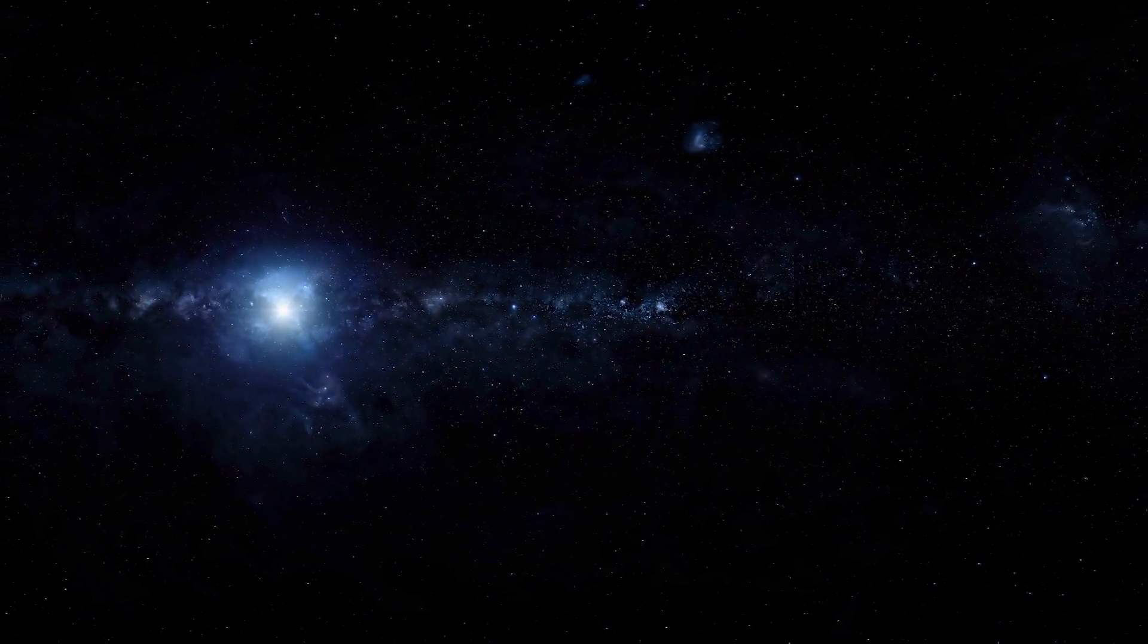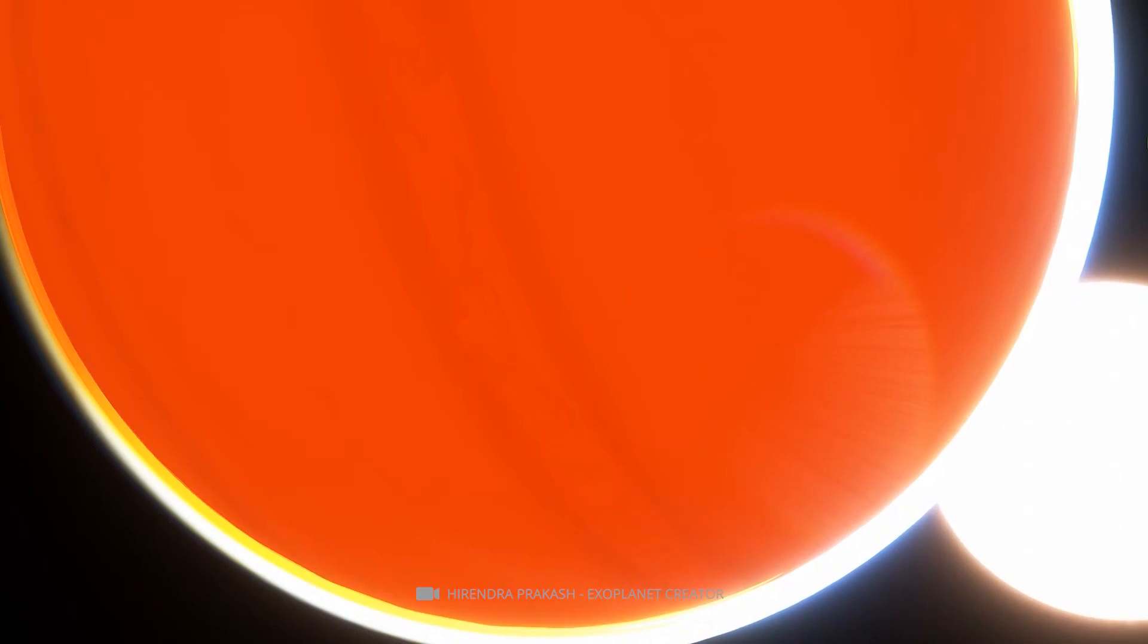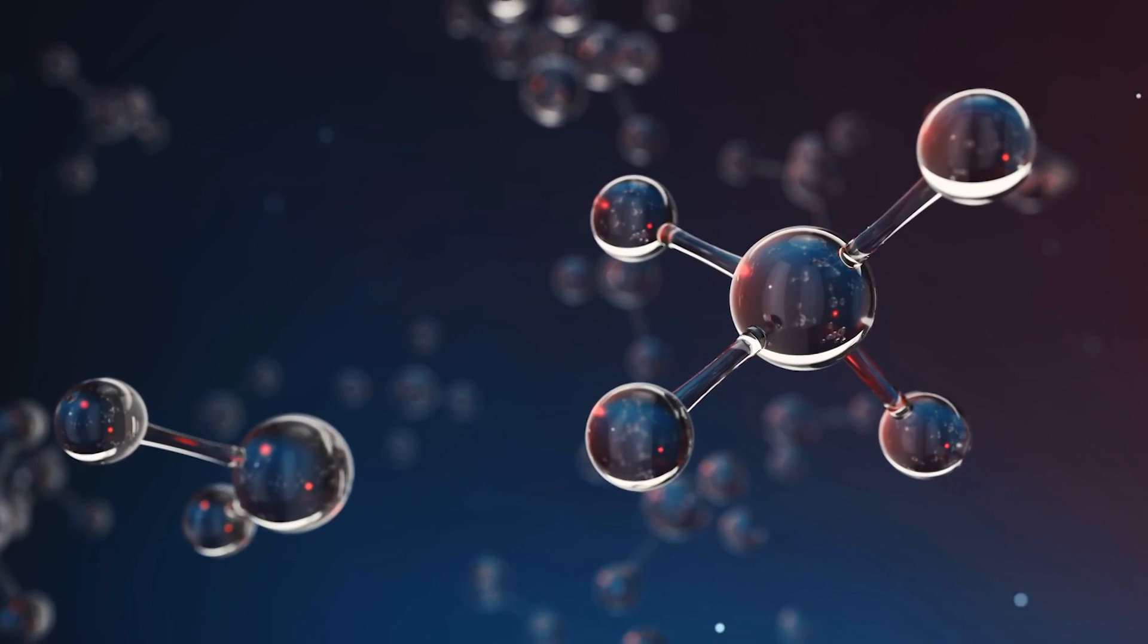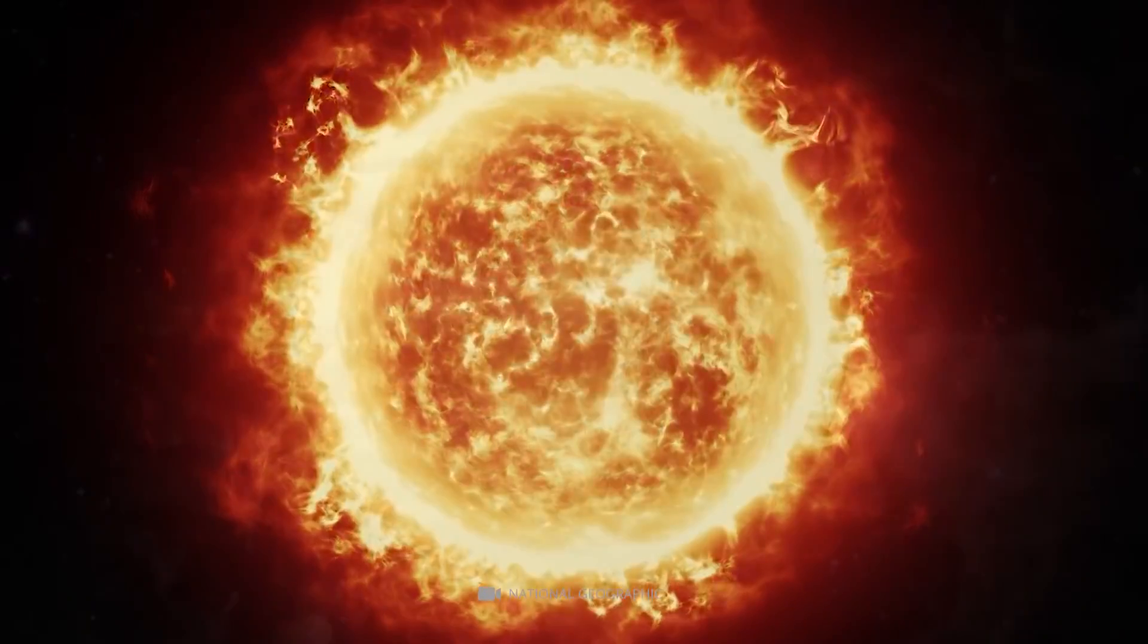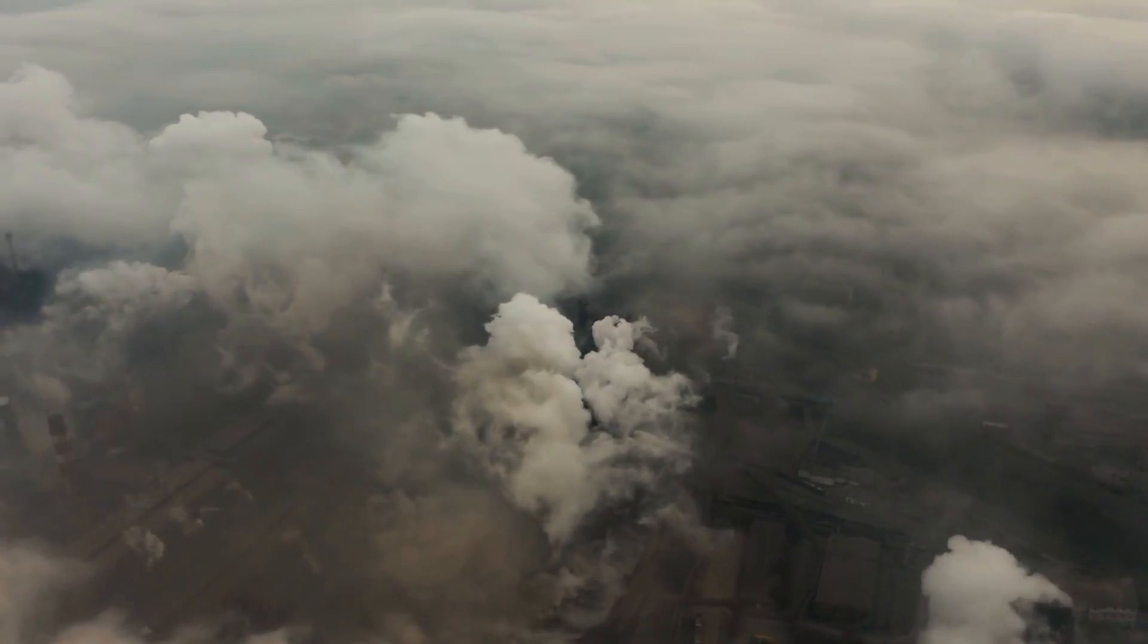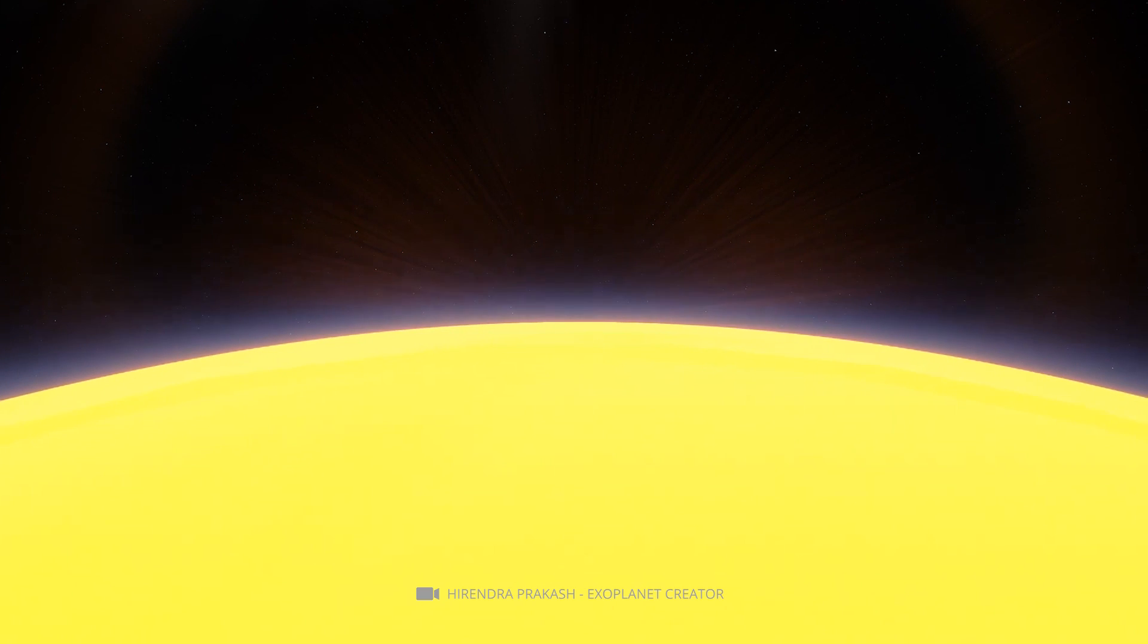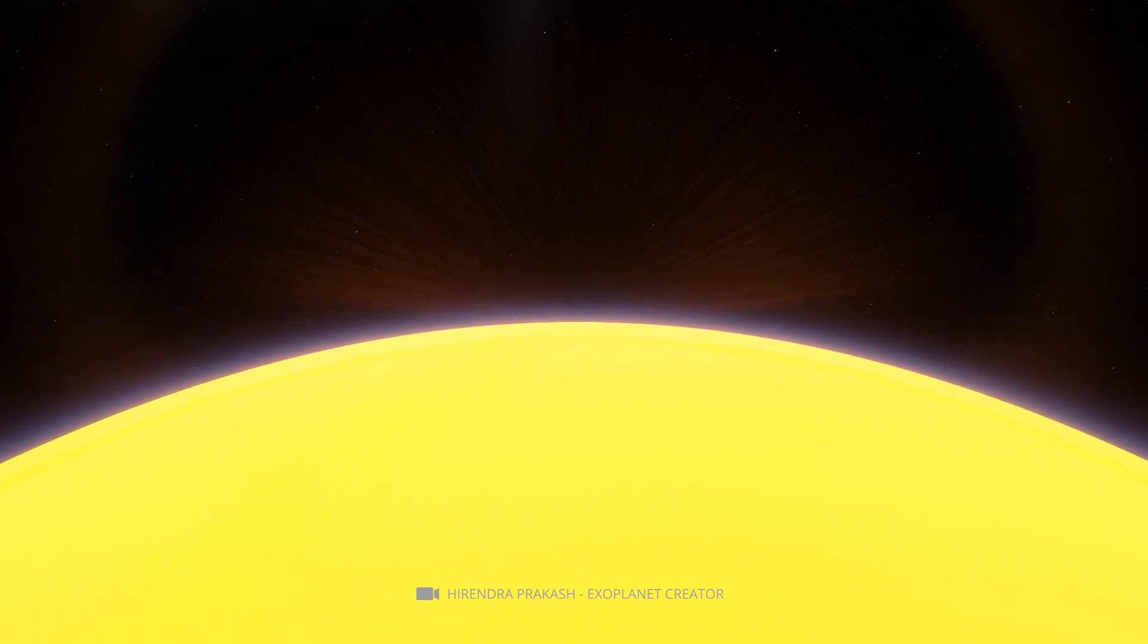Additionally, this planet appears brighter in the sky due to strong Rayleigh scattering caused by its thick atmosphere composed mostly of hydrogen and helium molecules, as well as small amounts of other gases like carbon dioxide or methane, which contribute even further to the brightness effect when seen from Earth.